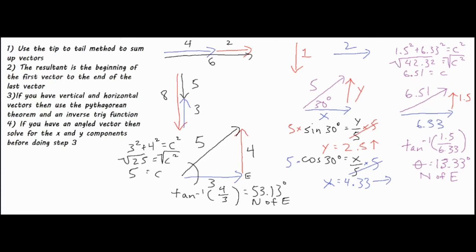I combined my vectors, used the Pythagorean theorem: 1.5 squared plus 6.33 squared, rounded that off to 42.32, took the square root of both sides, and got a final magnitude of 6.51. For the angle theta, I used the inverse of tangent — opposite over adjacent — so inverse tangent of 1.5 divided by 6.33 equals 13.33 degrees, which is north of east because we're tilting upwards 13.33 degrees up from east.